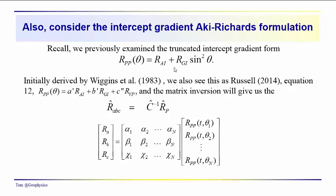And also, just another form of the equation that we looked at was the intercept gradient form. The three terms in this, we had the compressional wave reflectivity, the gradient. And over here we have the compressional wave velocity delta Vp over the average velocity, two times the average velocity.